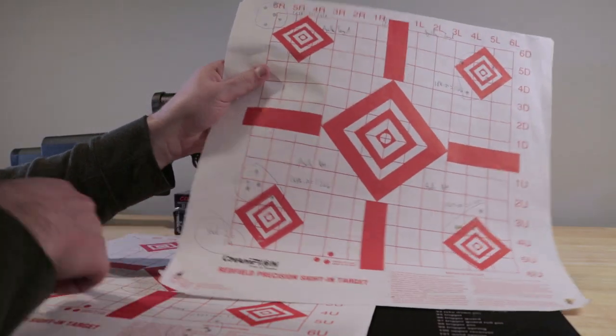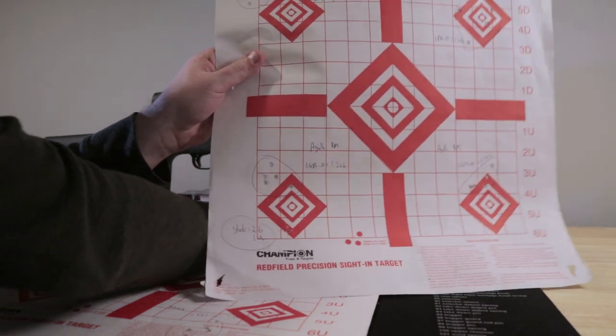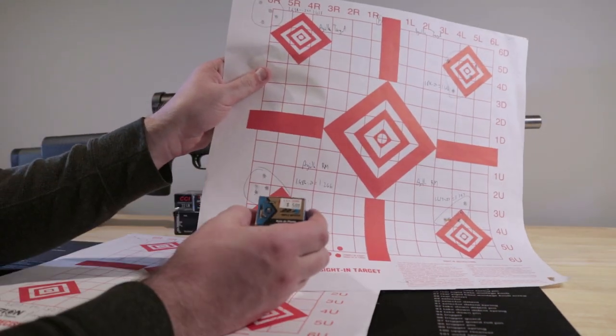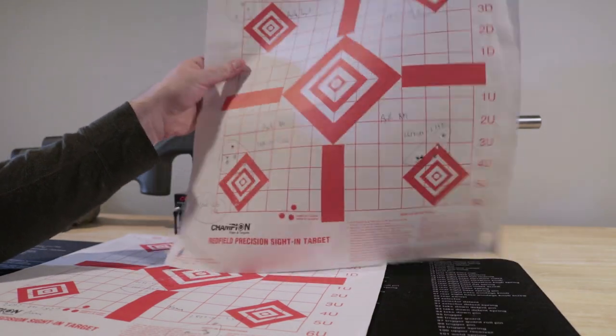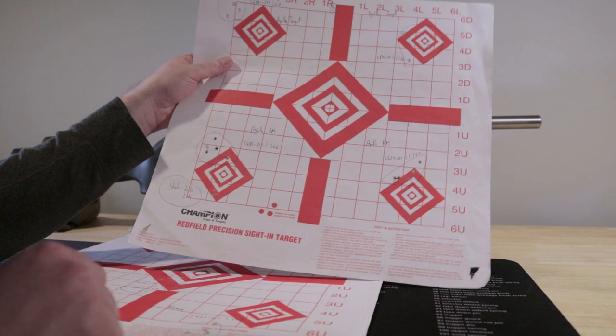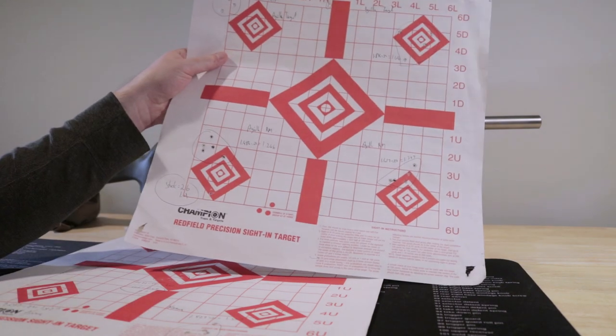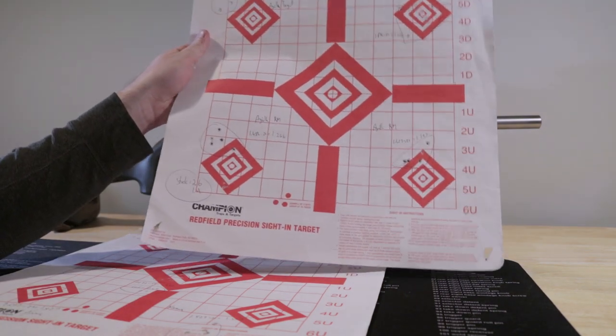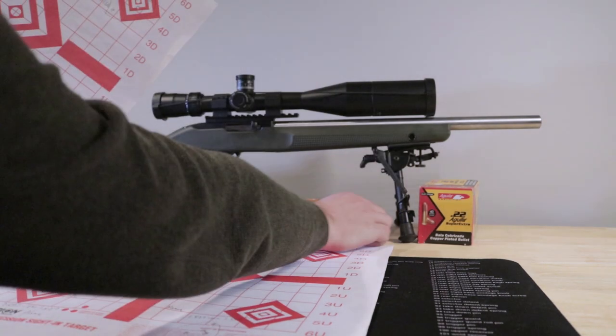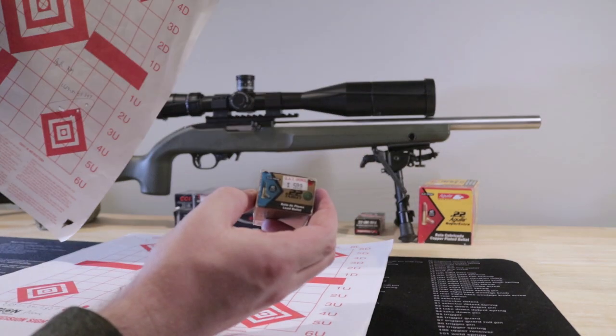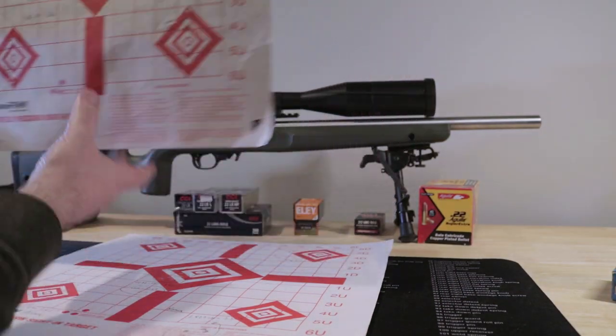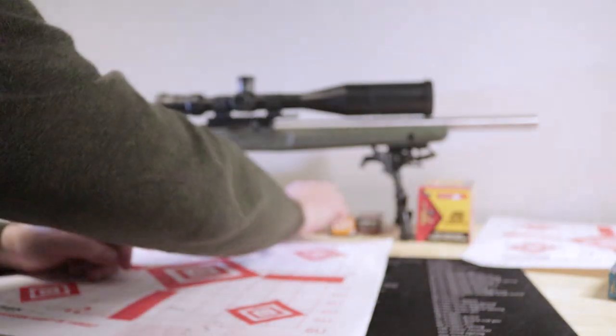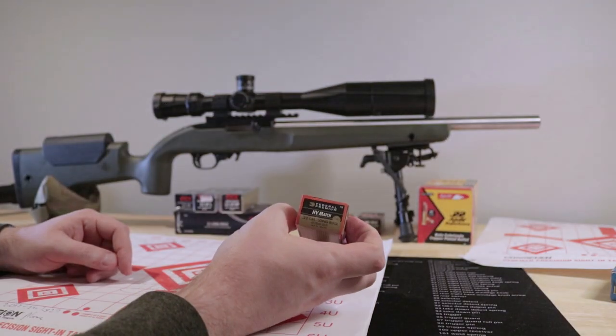Aguila Rifle Match. I shot this in the last video with the stock barrel, and it was getting 2.6, 1.9 inches. And here it's getting 1.2, 1.4. So pretty good improvement right there. And then Aguila Target was getting 1.4, 1.6. That's not too bad. It does get better.